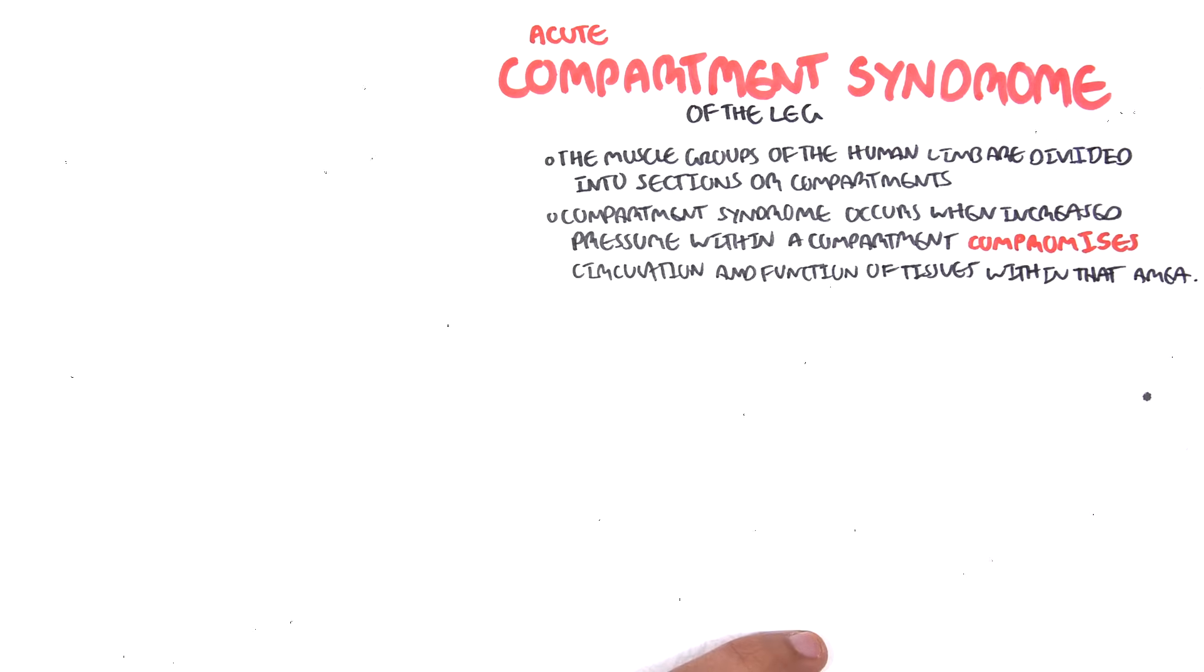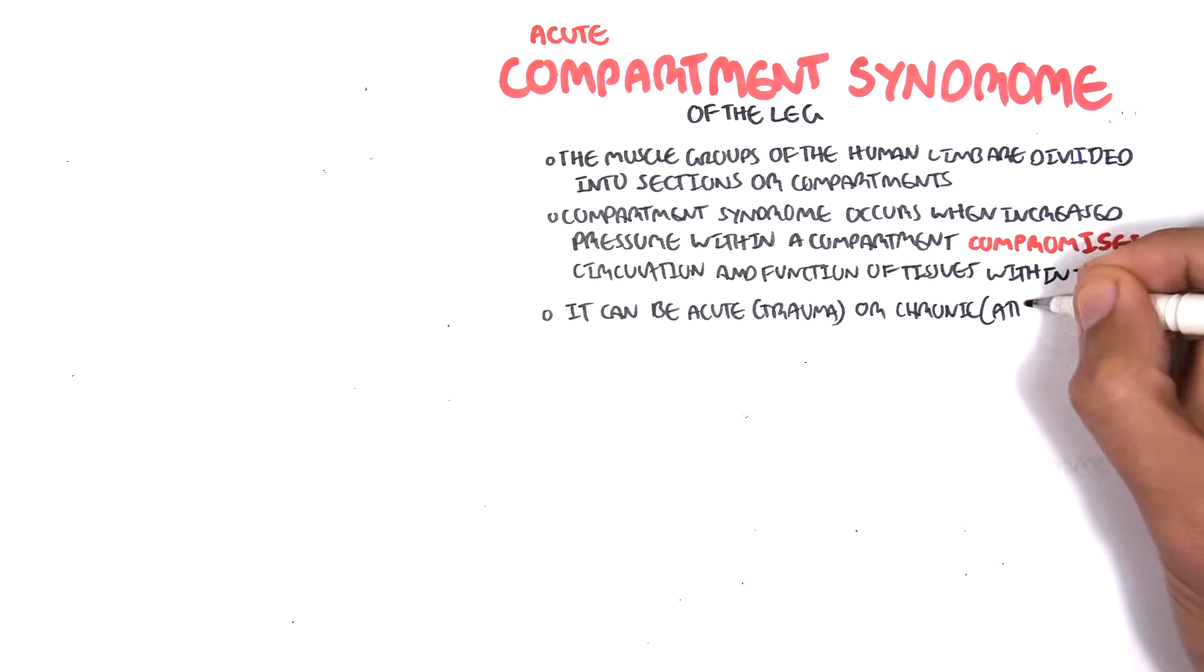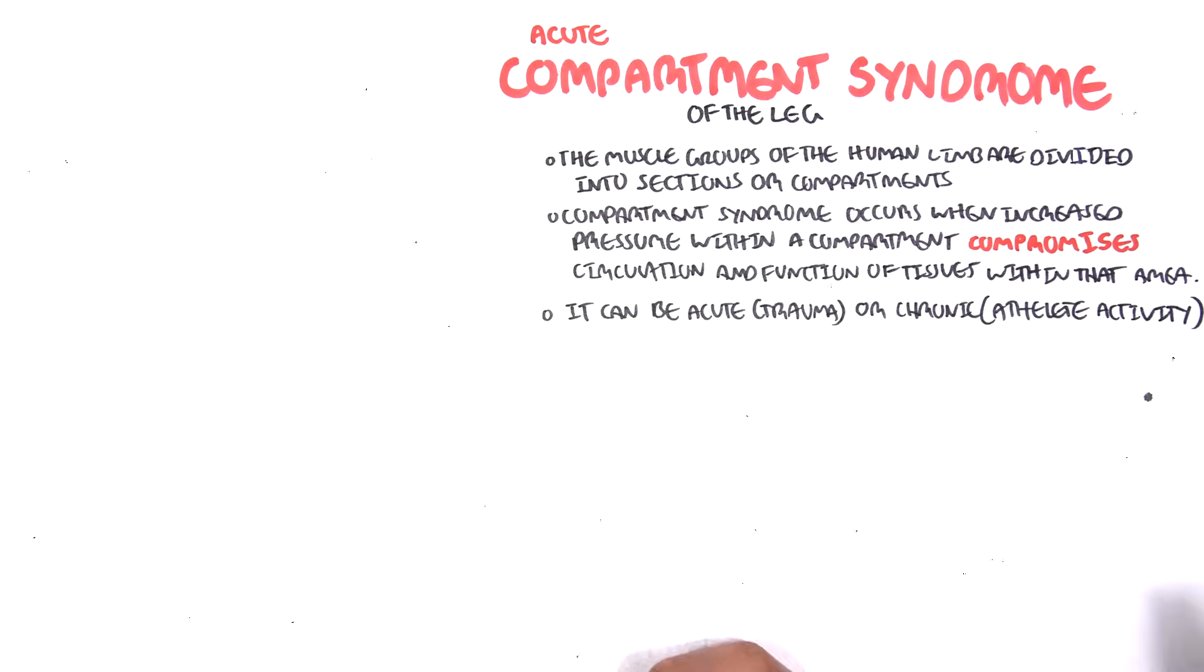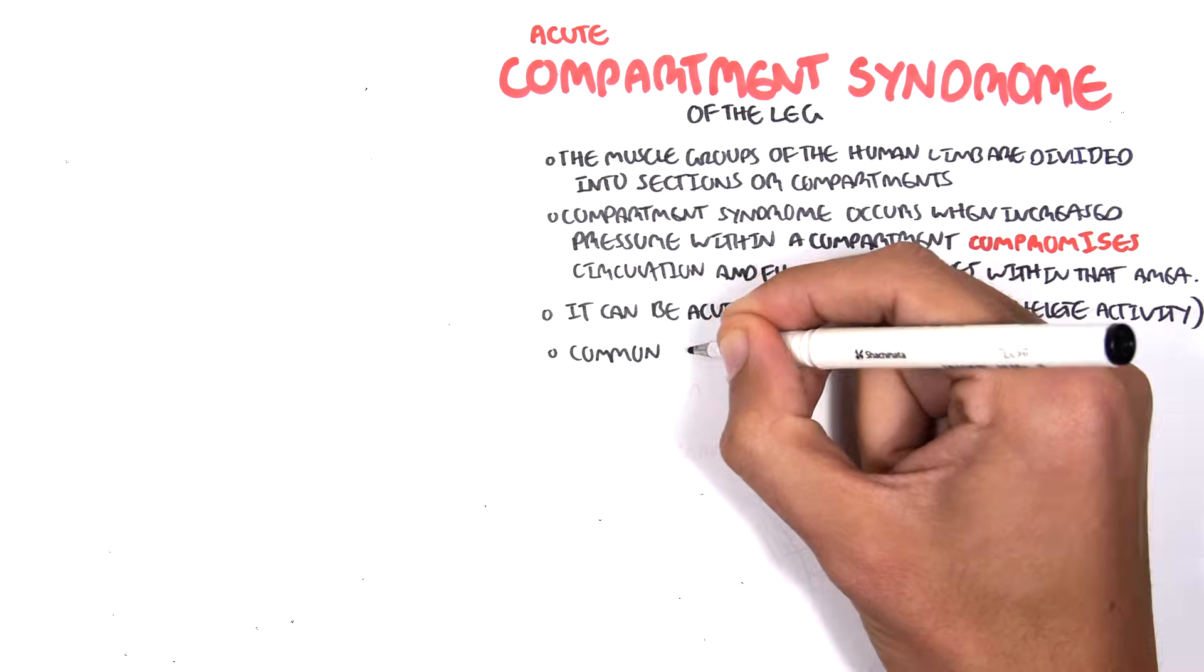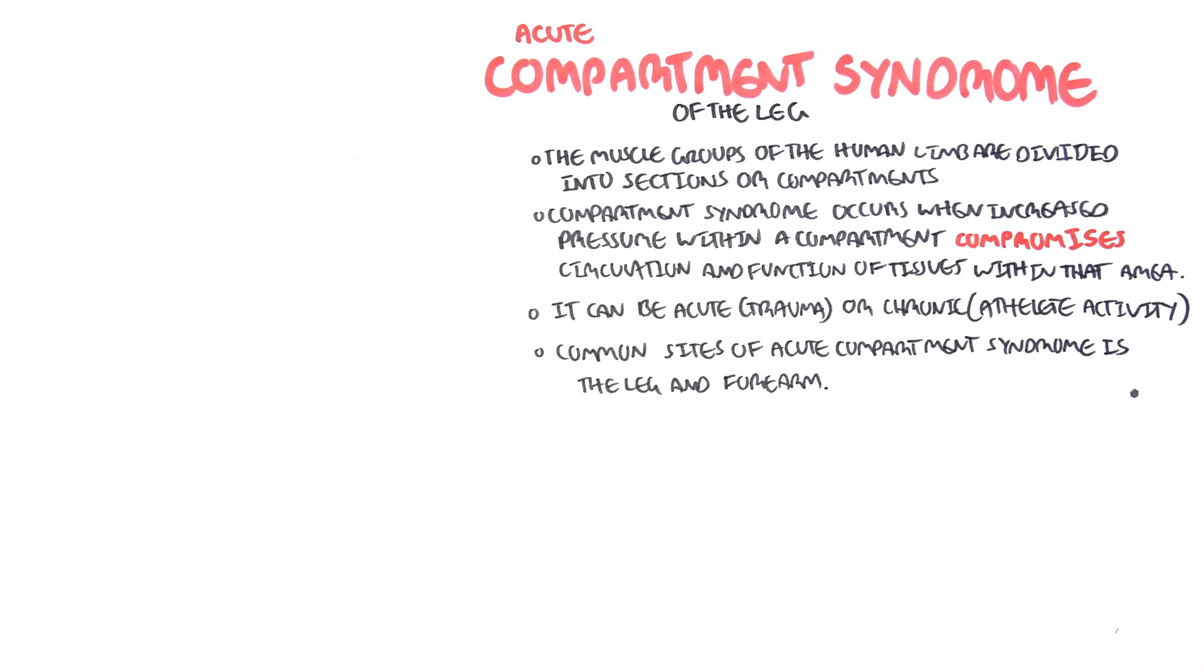Compartment Syndrome can be acute, such as from trauma, or chronic, which occurs in elite athletes. But we're mainly concentrating on Acute Compartment Syndrome. The common sites for Acute Compartment Syndrome are the leg as well as the forearm.